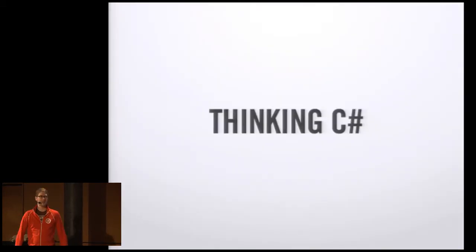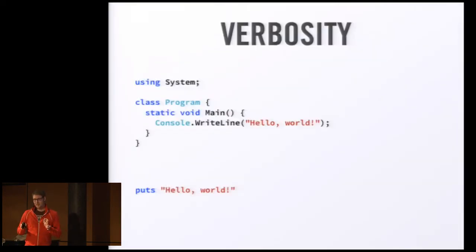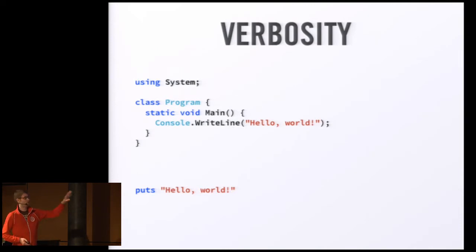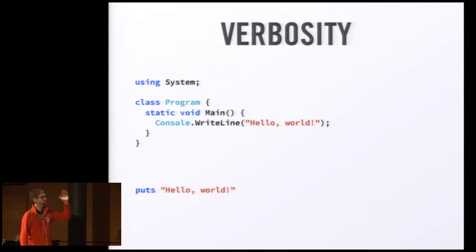C# is a very verbose language. This is the same code in C# and Ruby. The problem with C# is it doesn't have an inline interpreter - you can't start an interactive session like IRB or anything like that. The reason it does this is it needs a lot of structure: class definitions, static void main, a standard library import to get going. Ruby will let you get away without that a lot of the time because it's a scripting language. You can do all of this stuff in Ruby, but you don't have to.